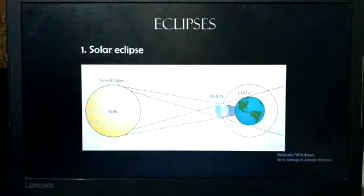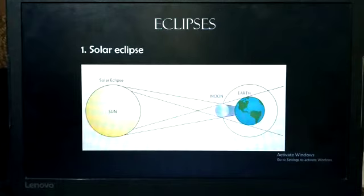So, a solar eclipse occurs when the moon passes between earth and the sun. That is, moon blocks the light of the sun and the shadow of the moon falls on the earth and the sun cannot be seen.